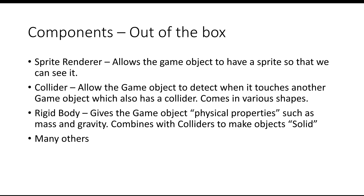Colliders are not to be confused with rigid bodies, although they do work in tandem. A rigid body allows us to tell Unity that our object — whether that be an inanimate tree or a character — has physical properties such as mass, which allow us to apply gravity to it. If we combine a rigid body with colliders, we can make our object solid so that the character can no longer walk through walls, trees, or other players. There are many different types of components you can add, and once you get into the Unity editor you can really explore the many possibilities.